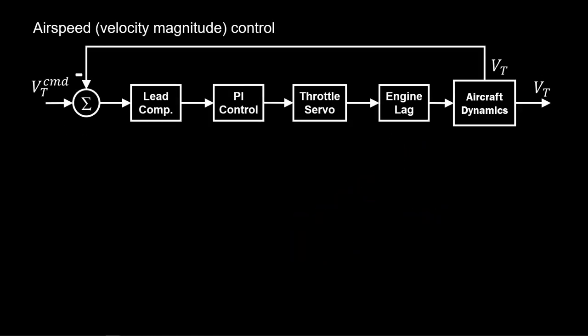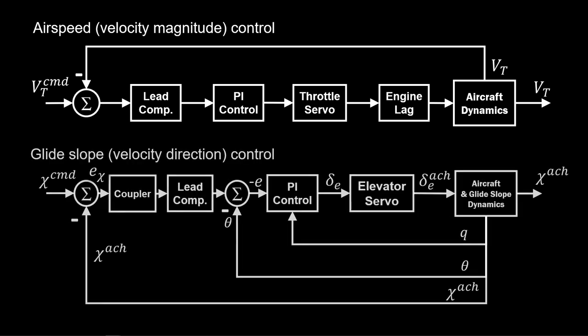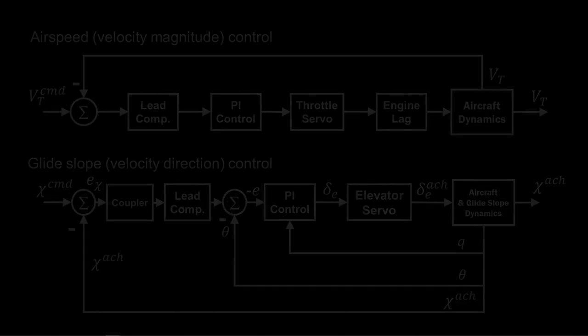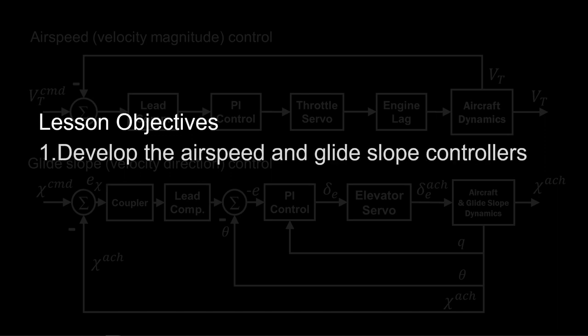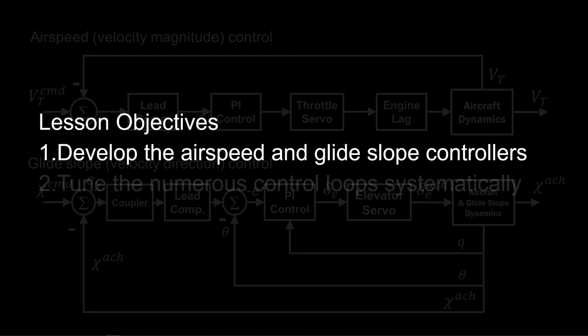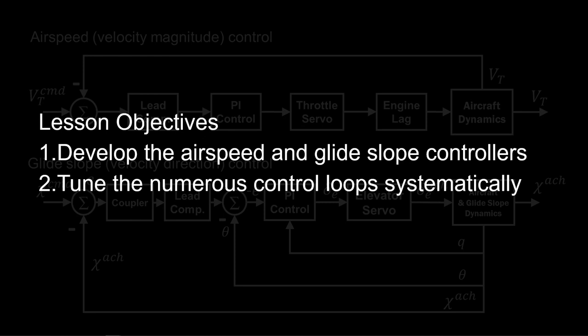This is accomplished with two separate control loops: velocity magnitude control and glide slope control, which includes velocity direction. In this lesson, we develop the airspeed and glide slope controllers in detail. This will create numerous control loops, which will be tuned and analyzed systematically. We then simulate the full-tuned glide slope control system.